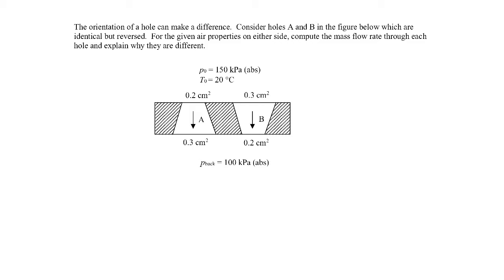The two mass flow rates are going to be different. Sketching streamlines: the one on the left flows like a converging-diverging nozzle — there's a converging part, then a throat in the middle, then a diverging section. Hole B on the right is just a converging nozzle, with the throat at the bottom side exit.